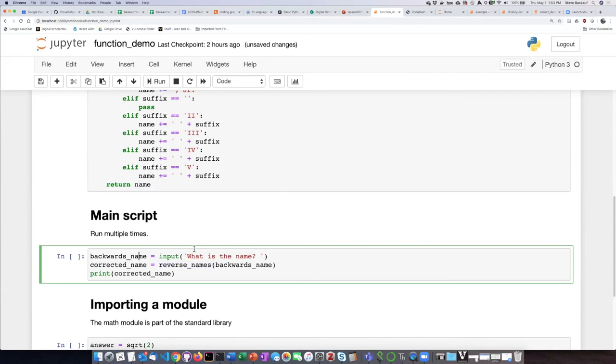I have here a very tiny little script. The first line basically asks me what is the name and lets me type it in and then assigns that to the variable called backwards_name. Then I take whatever is in the backwards_name variable and pass it into the reverse_names function. That function is going to switch the name parts around into the proper order. And then the output of the function, the returned output, is going to be assigned then to a variable called corrected_name. And then the variable we will print to see what it looks like on the screen.